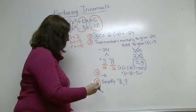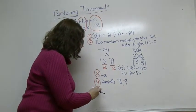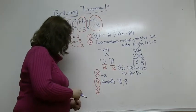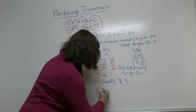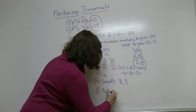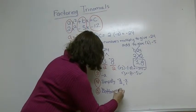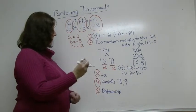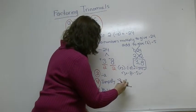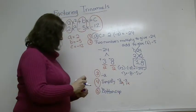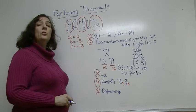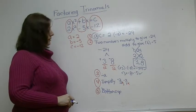Once we get our number simplified, step 5 is what's called bottoms up. Bottoms up is where we take and we put an x on the bottom, on the numerator of those two fractions that we just simplified.